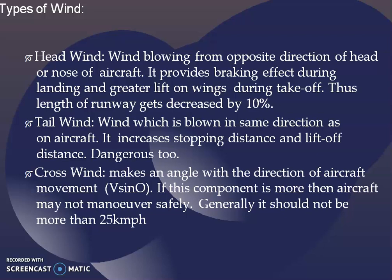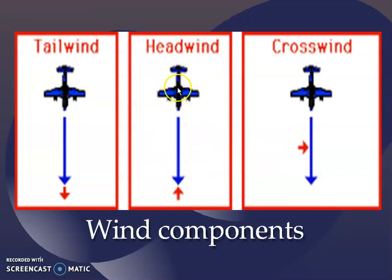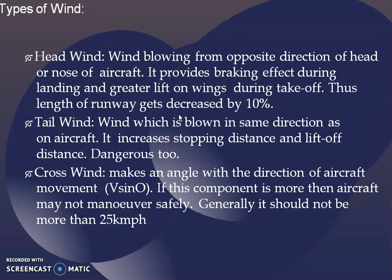What are the different types of wind? One is a headwind, second one is a tailwind, next is a crosswind. Among these three, headwind is a very favorable wind for our aircraft and for the runway orientation also. Headwind is a wind which is blowing from the opposite direction of the head or nose of the aircraft. This is the head or nose of an aircraft. The wind blowing in an opposite direction to the head of the aircraft, we will call it as a headwind. This headwind will decrease the length of runway by around 10% because it provides a braking effect during landing and gives greater lift on the wings during takeoff. So headwind is a very good and supporting wind.